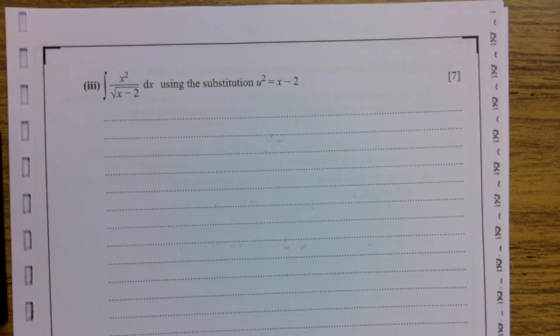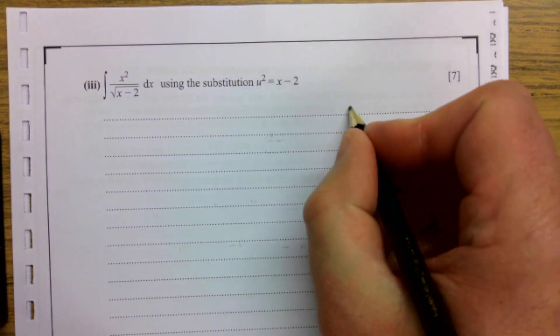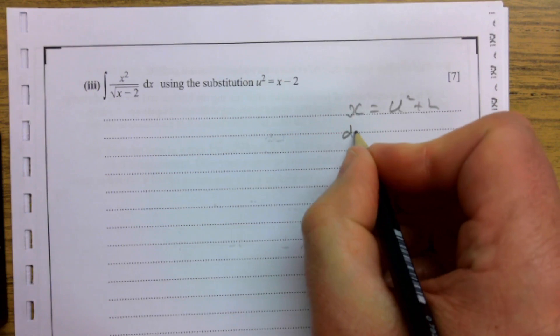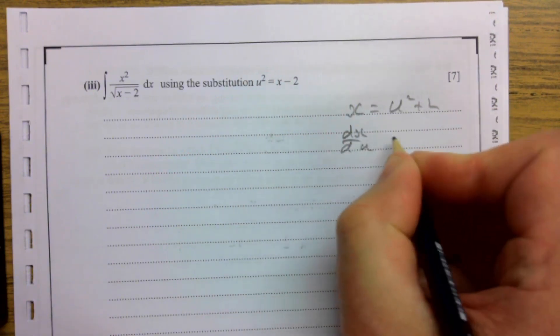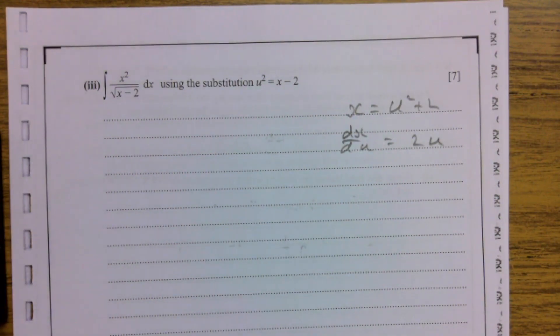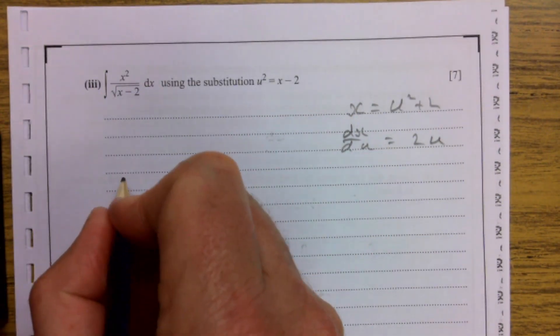Use the substitution u squared equals x minus 2 to work this one out. Again we have a couple of different ways of doing this. x then is u squared plus 2. Differentiating that you get dx by du is going to be 2u.